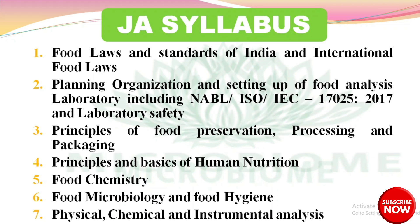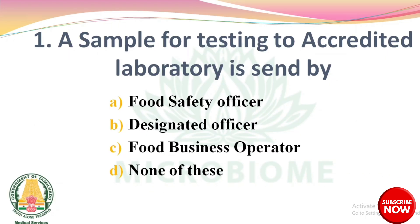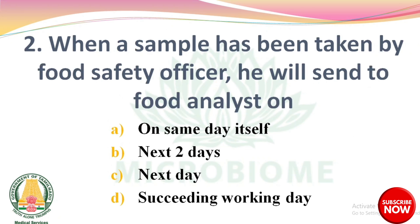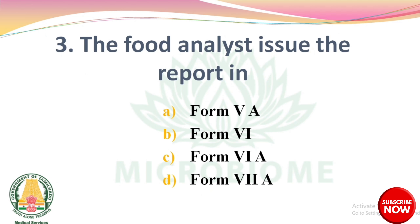Question 1: A sample for testing to an accredited laboratory is sent by — options: food safety officer, designated officer, food business operator, none of these. The right answer: option A, food safety officer. Question 2: When a sample has been taken by a food safety officer, he will send it to the food analyst on — options: same day itself, next two days, next day, succeeding working day. The right answer: option D, succeeding working day. Question 3: The food analyst issues the report in — options: Form 5A, Form 6, Form 6A, Form 7A. The right answer: option D, Form 7A.